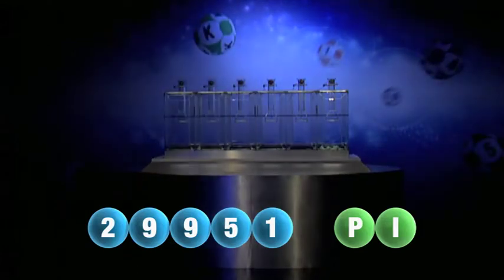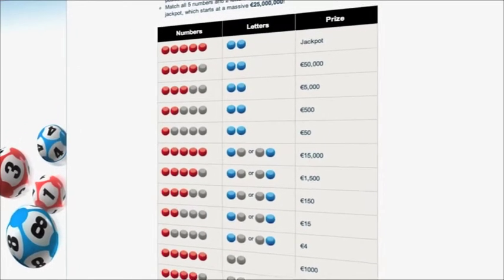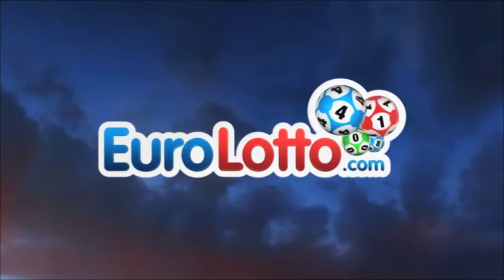Here at Euro Lotto, you have 15 different ways of winning. The jackpot is the highest prize and it's never less than 25 million euros. Go to EuroLotto.com every day at 8 o'clock CET to see if you have won.